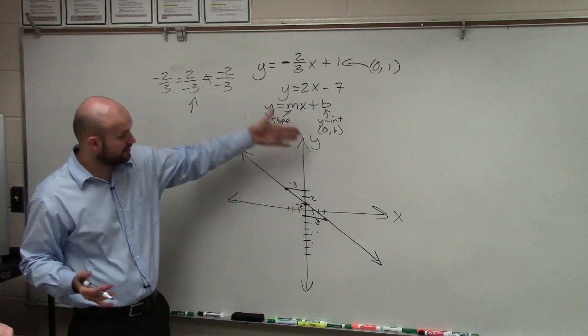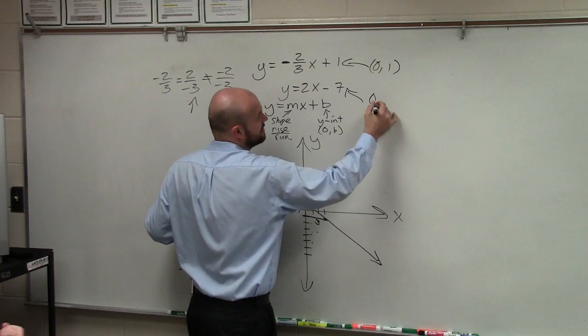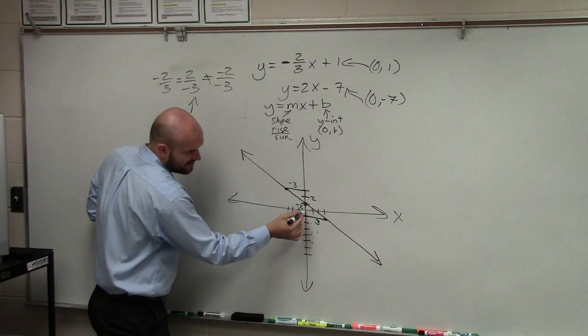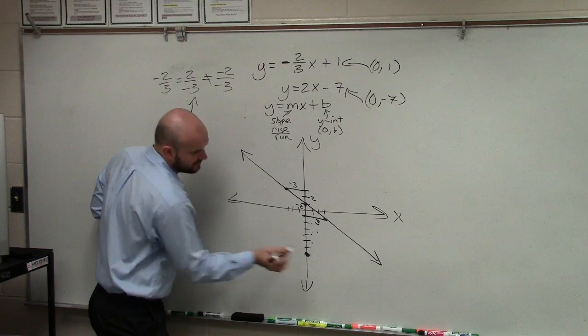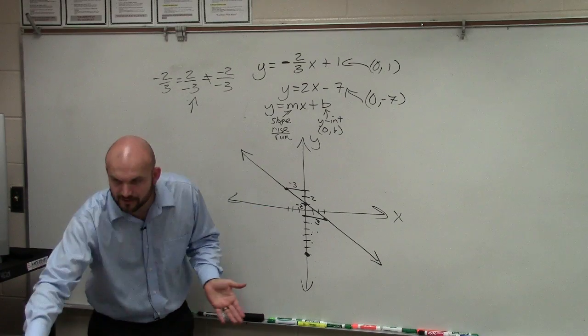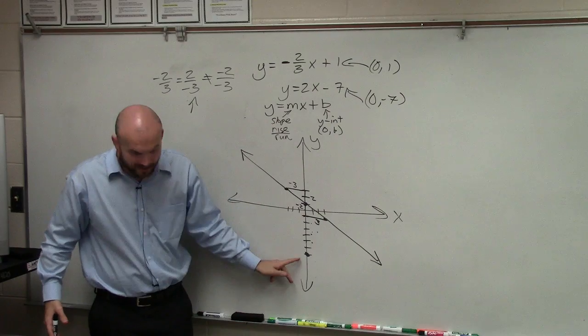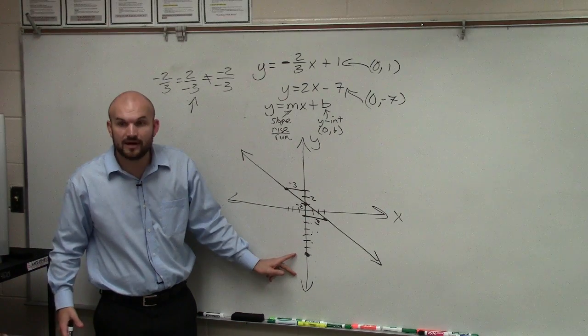So now, let's do the next line. So we graph the first line right there. Now, let's do the next one. The y-intercept here is 0 comma negative 7. So now, you go down to negative 7. 1, 2, 3, 4, 5, 6, 7. Does everybody see how I plotted the y-intercept? If you're not looking up here, it makes it more confusing. Negative 7. I plotted it on the y-intercept. Does everybody understand the plot the y-intercept?